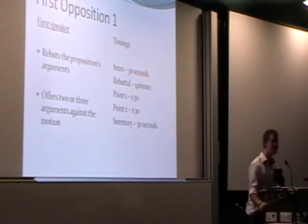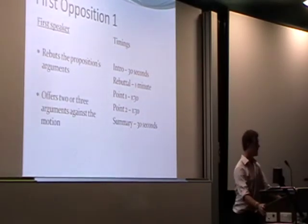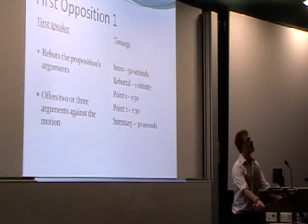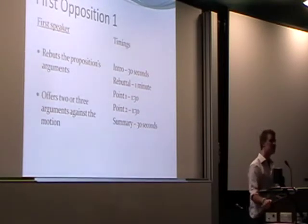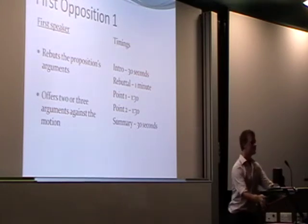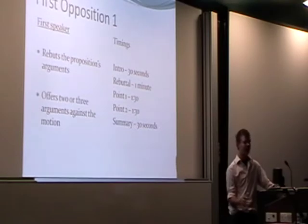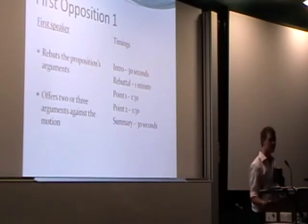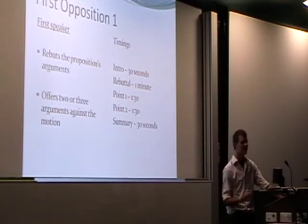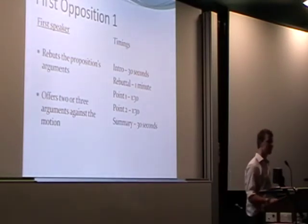The first opposition speaker's main point is to show why the proposition's policy is a bad idea, why it won't work, why it's generally terrible, and why we should oppose the motion. To do this, firstly, you're going to have to rebut what the person before you said. So you take their arguments and show why they're not relevant, they don't make sense, or any other reason you can fault with those arguments.